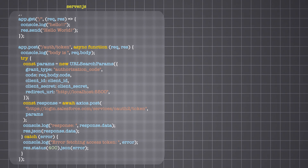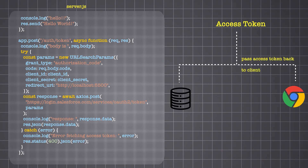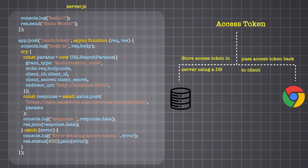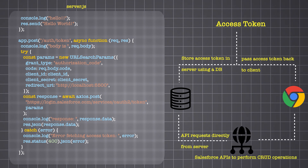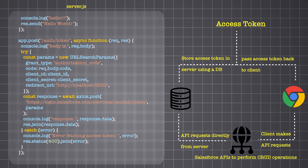Let's quickly build an Express server that acts as a secure backend, where we safely store our client secret and handle the POST request to Salesforce for an access token. Once we receive the token, we have two options: either pass back the access token, or store it on the server and use it to make Salesforce API requests directly and return only the necessary data — like accounts, contacts, and other information — to the client. However, this adds additional complexity and responsibility on the server to securely store the access token and client secret.